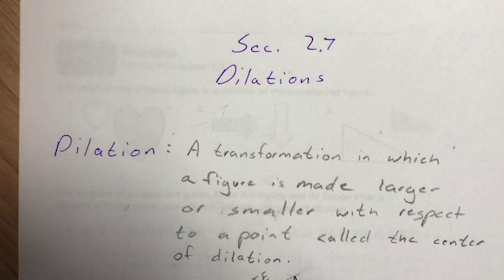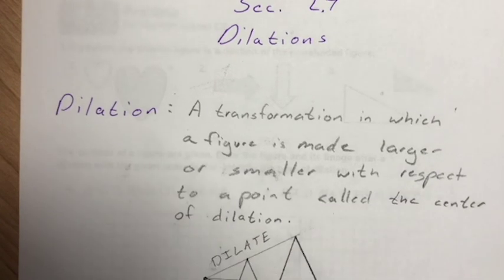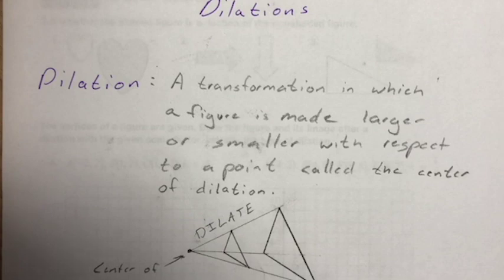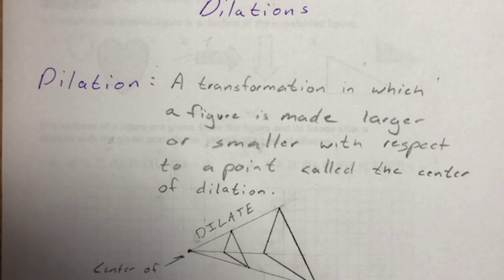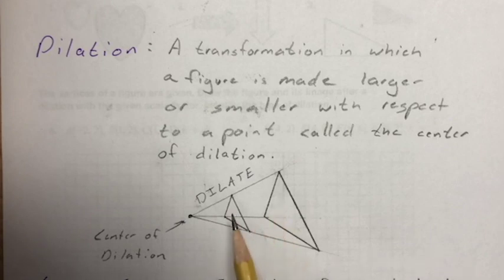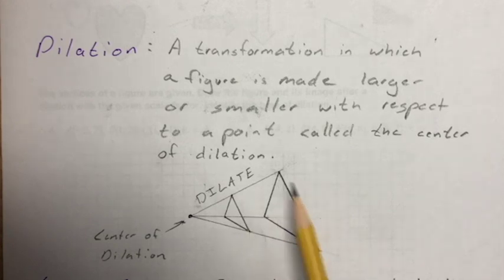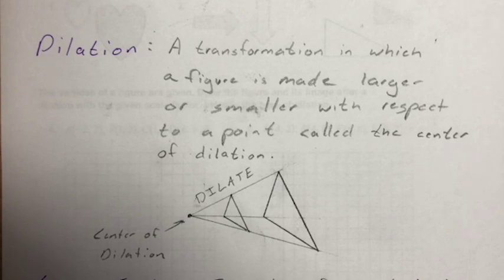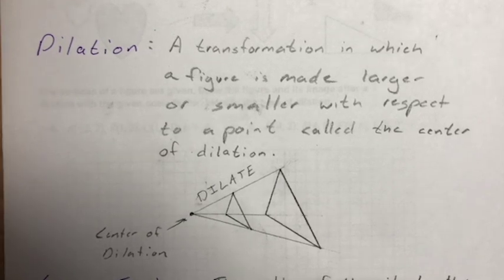Section 2.7: Dilations. This is the last section of this chapter. When I think of 'dilation,' I always think of pupils dilating and getting smaller, but that's not right. Dilate actually means to enlarge. In mathematics, however, dilation can be either making a figure larger or smaller with respect to a center of dilation — so it can be an enlargement or a reduction.